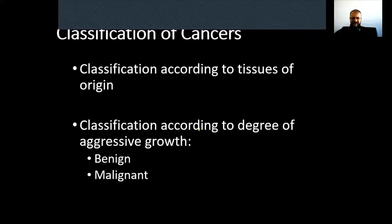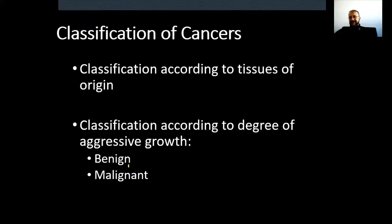Not cancers — classification of tumors. Because if it's benign, it's not cancer, it's a benign tumor. So according to aggressiveness of growth, the tumor can be benign or malignant. There are two groups of tumors: benign tumors and malignant tumors.